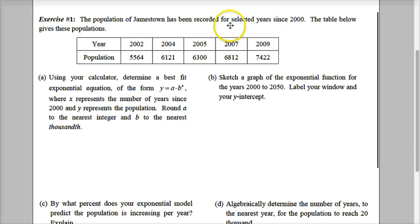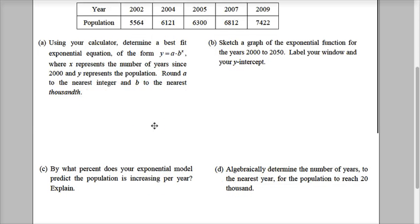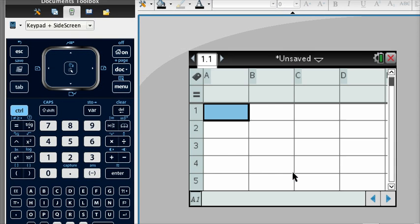So we have the population in Jamestown, which has been recorded for years since 2000. The table here shows your regression. Question 1 says, using the calculator, determine the exponential growth in the form y equals a times b to the x, where x is the number of years since 2000. So on your calculator, we're going to go to spreadsheets, and then we're going to list it. But instead of listing the year as 2002, remember it says the years since 2000. So from 2000 to 2002, that's actually two years. 2000 to 2004 is four years, and so on.